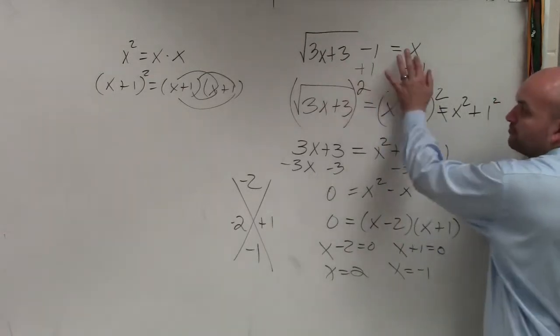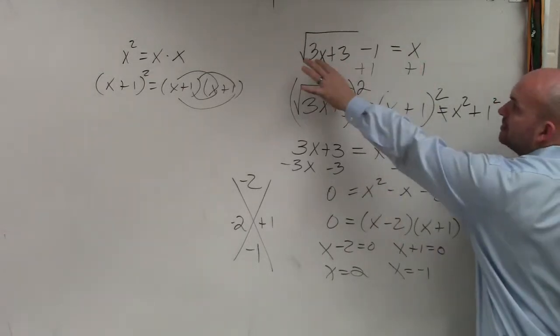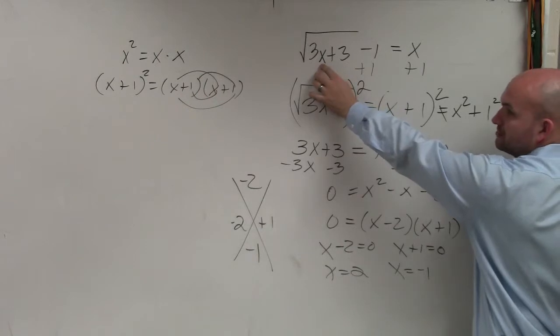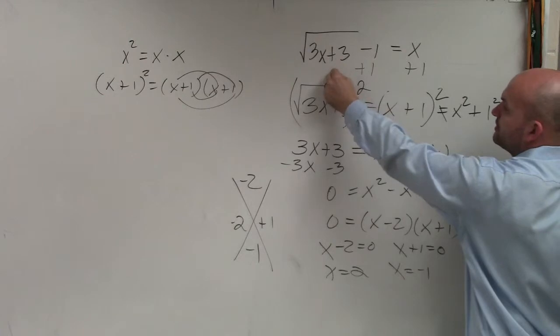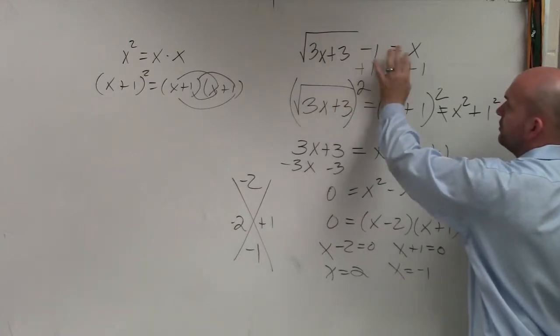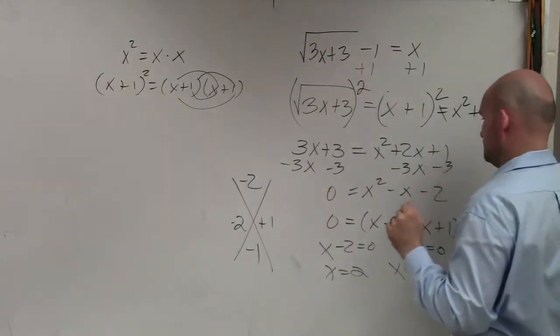Let's put in a negative 1 in for both x's, OK? 3 times negative 1 is negative 3. Negative 3 plus 3 is 0. Square root of 0 is 0. Negative 1 equals negative 1. They both work.